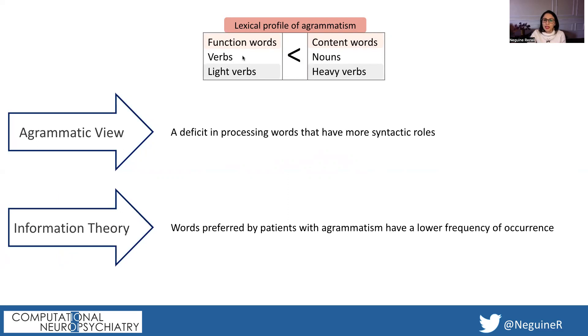Here we're proposing an alternative view to this based on information theory. It proposes that these words have higher frequency of occurrence and for this reason they're avoided when you compare them to these words that occur a lot less frequently.